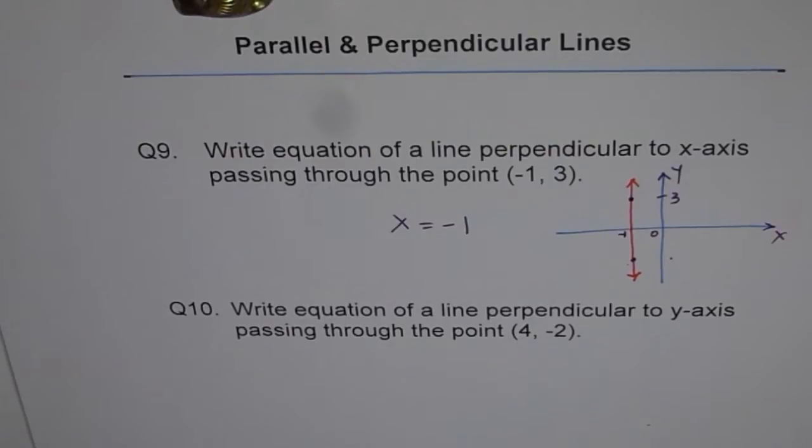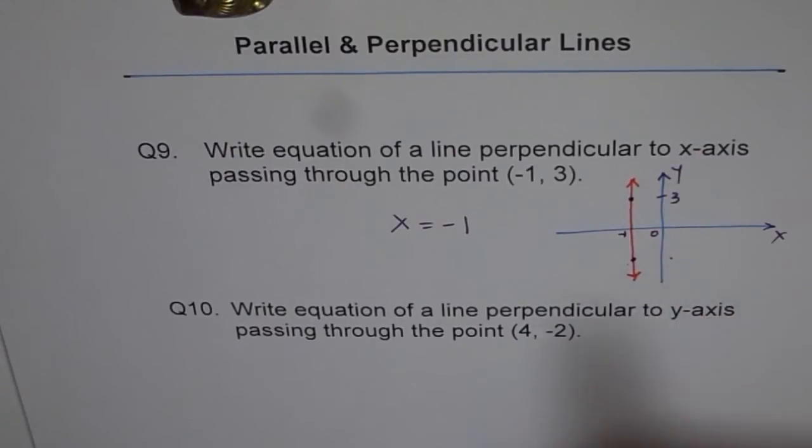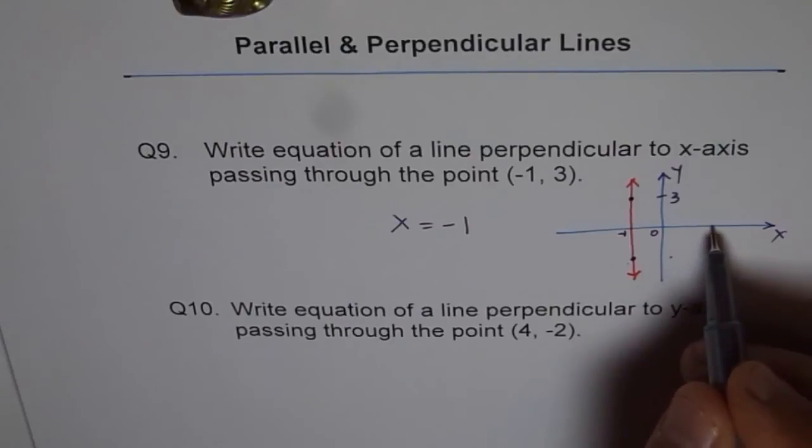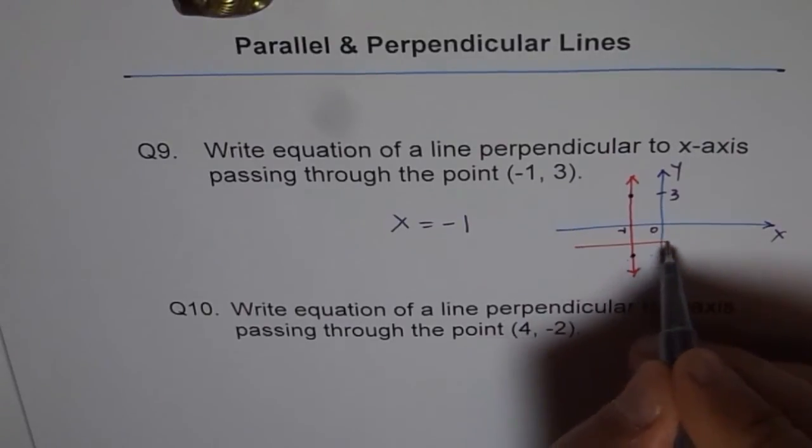So let me use the previous diagram. Perpendicular to y-axis means that is my y-axis. So perpendicular will be horizontal lines, right? Passing through (4, -2). So 4 minus 2 is somewhere here. So let me draw a line like this,